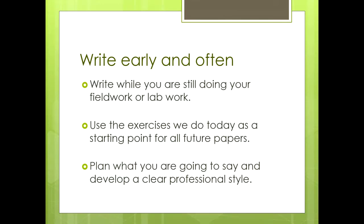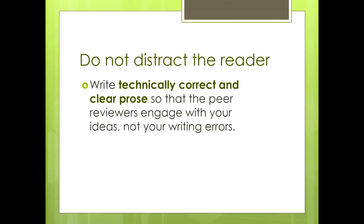Plan what you're going to say and develop a clear professional style. This is a professional task and a generic skill expected by the time you graduate. Don't distract the reader — the journal editor and peer reviewers. Write technically correct and clear prose as a baseline, so that peer reviewers engage with your ideas and not your writing errors. You don't want a barrage of complaints about grammar and punctuation coming back at you, because that means they've been thinking about surface qualities of the writing rather than engaging with the ideas.